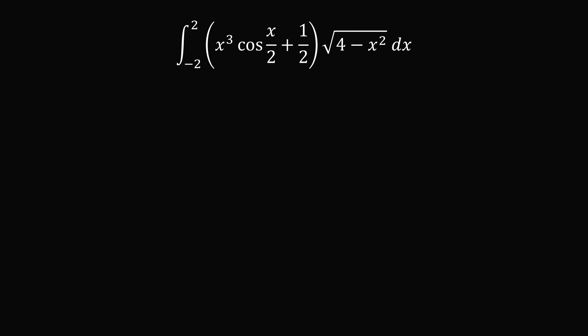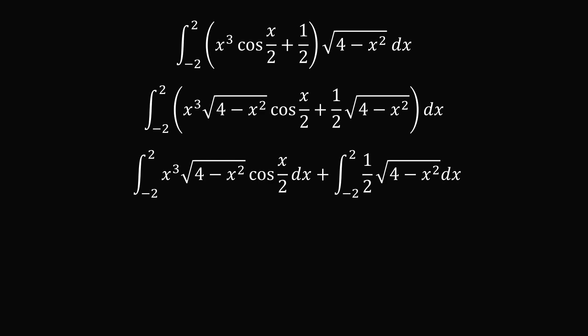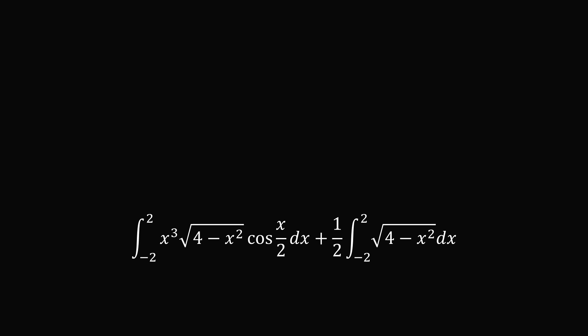The first thing we will do is we will distribute the square root of 4 minus x squared to both of the terms in the summation. So our integral becomes the following. Now, the integral of a sum is exactly equal to the sum of the integrals. So let us split this up into two different integrals. Now, from the second integral, we can also pull out this factor of 1 half. So from here, let's continue our analysis.